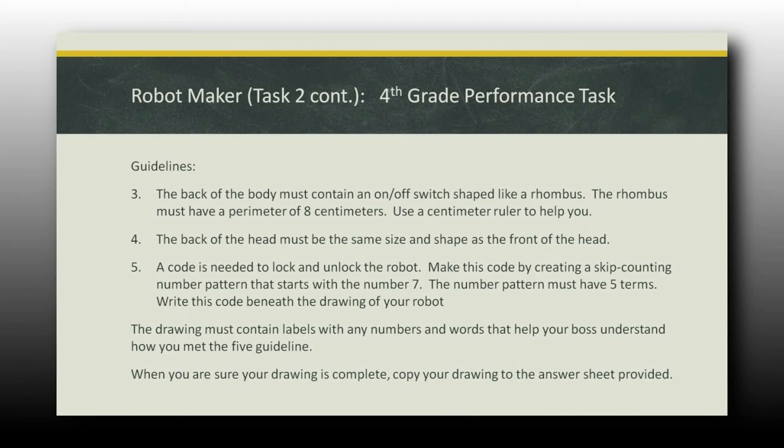The back of the body must contain an on-off switch like a rhombus. How many people know what a rhombus is? You don't have to say it out loud. Rhombus. Fun. The rhombus must have a perimeter of 8. So again, you've got to have an exact perimeter. A code is needed to unlock your robot. Make this code by creating a skip counting number pattern that starts with the number 7. So kids have to start with 7. The very smart, very bright kids will say 7, 8, 9, 10, 11, 12. That's a skip pattern, right? It's going up by 1. The creative kids will go up by 42. They'll figure out something. They'll do a creative skip counting. And then when they're done with that, you're going to turn into your boss and make sure you've met all those guidelines.